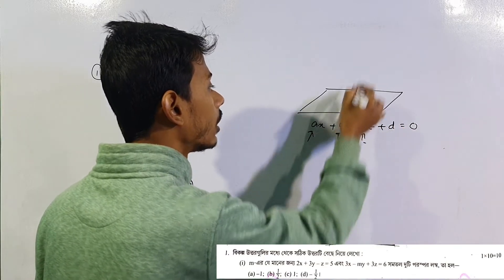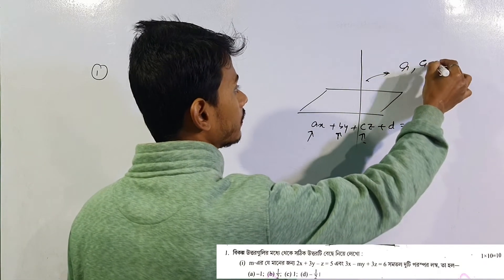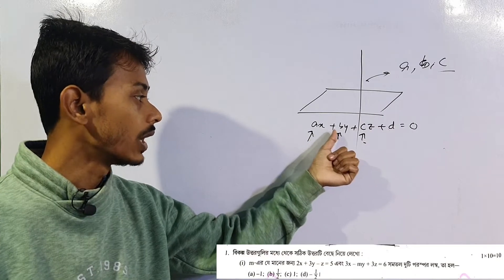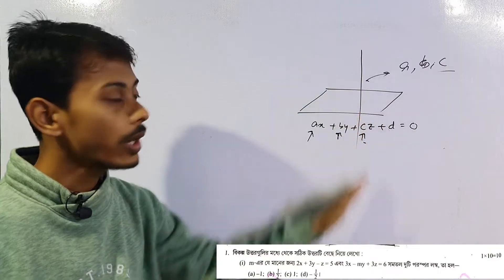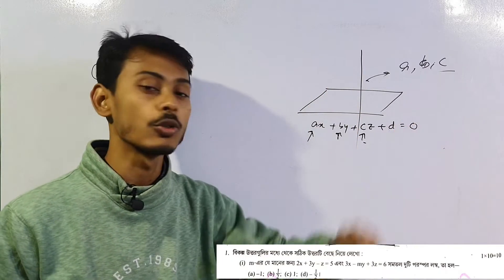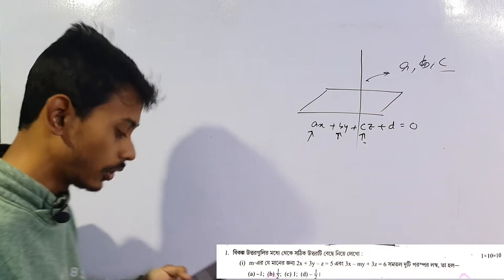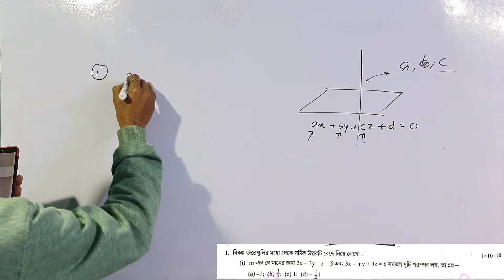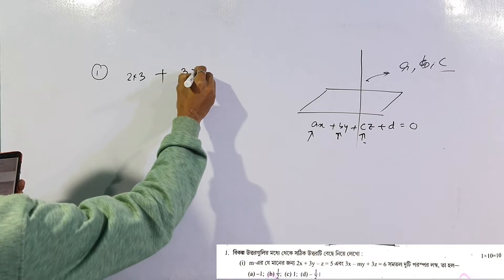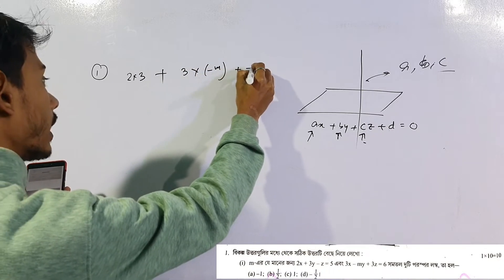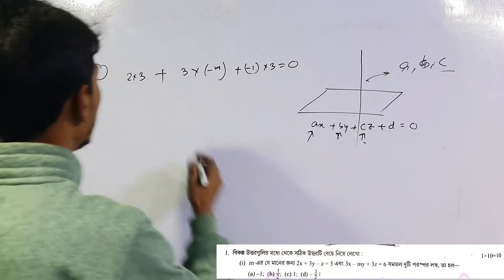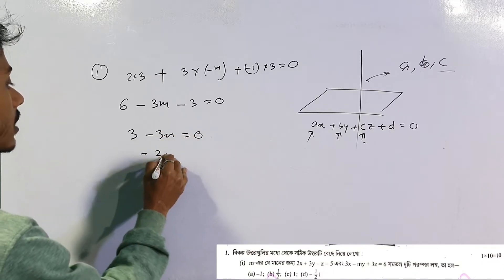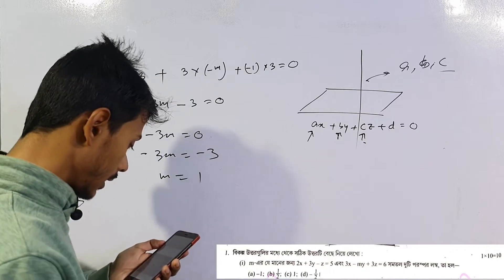The equation is ax + by + cz + d = 0, so a, b, c are the direction ratios (DRs). Suppose we have the same type — the DRs. Solving: 2×3 + 3×(−M) + 4×(−1) + (−1) gives us three equals to zero. By the second result: 6 − 3M − 3 = 0, so 3 − 3M = 0, which gives −3M = −3, therefore M = 1. The best and correct option.